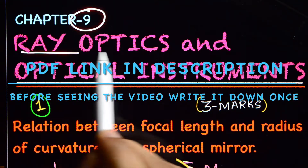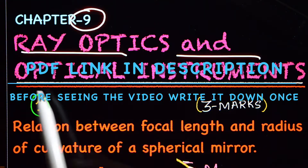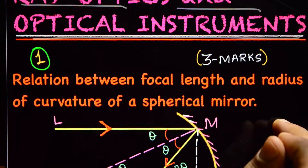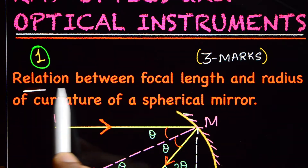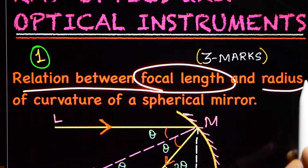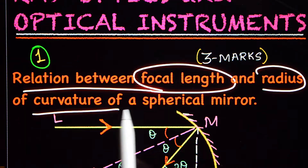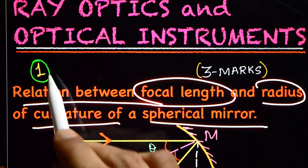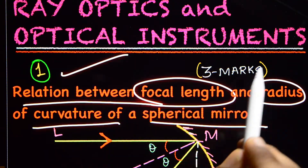Chapter 9: Ray Optics and Optical Instruments. The first topic is the relation between focal length and radius of curvature of a spherical mirror.